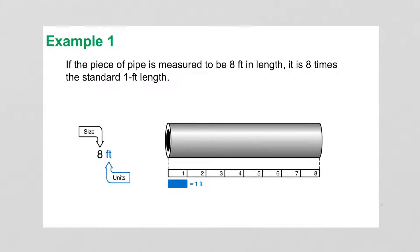Example 1 says, if this piece of pipe is measured to be 8 feet in length, then it's 8 times its standard 1 foot length. So the standard length would be 1 foot, and so it's 8 times that.